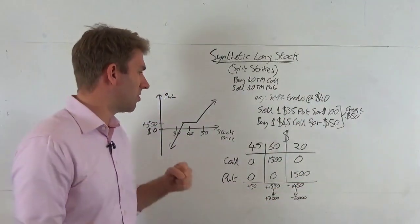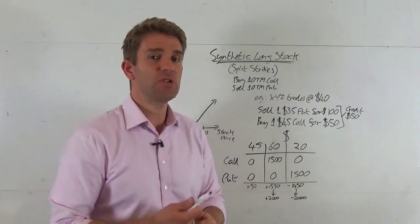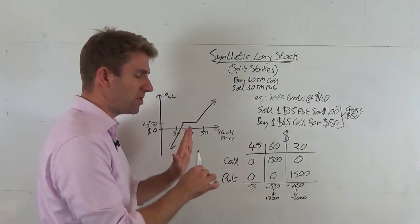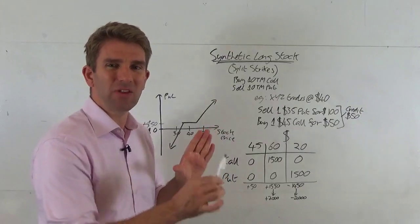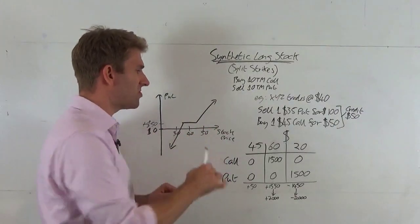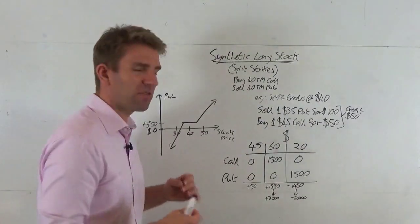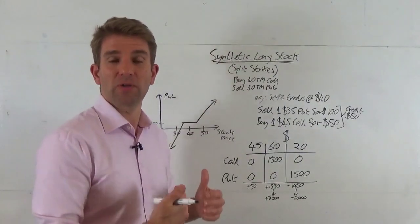So you can see we're way better off by creating this to the downside if we're losing than we are if we'd held the long stock. So that's a commercial decision for you to make as a trader. You're like okay well if I think the stock's going to sit and do nothing and I don't really want to lose money if it goes down by a few bucks.